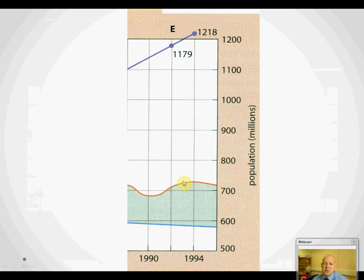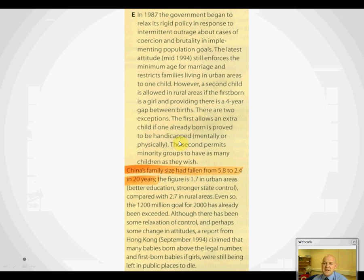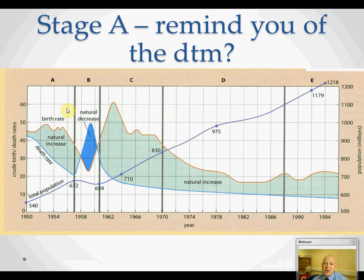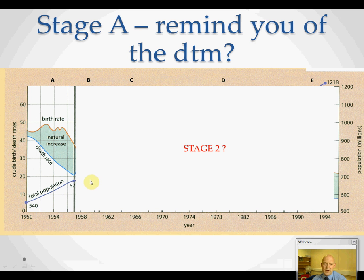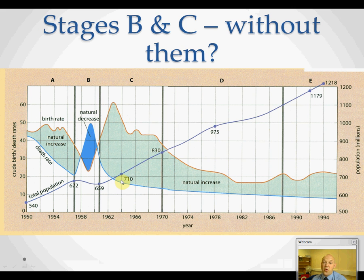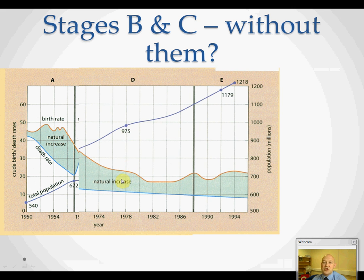Stage E brings us up to date. They've had to tinker and play with the one-child policy because there are problems of a very unstable population pyramid. With one child only — remember the replacement ratio is 2.11 — you've got a very unstable population pyramid where the number of people coming into the workforce to pay taxes is very low, and the dependency ratio is very high. Going back and looking at stage A again: it looks exactly like stage two of the DTM. So at what point would China's population have levelled out and got into stage four? Probably about 1964. If it had got there by 1964, it would have missed out all of this growth period. I wonder what China's population would be now.